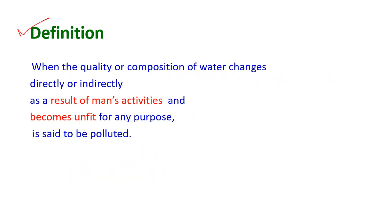The definition of water pollution: when the quality or composition of water changes directly or indirectly as a result of the activities of human beings and becomes unfit for any purpose, this is known as water pollution.